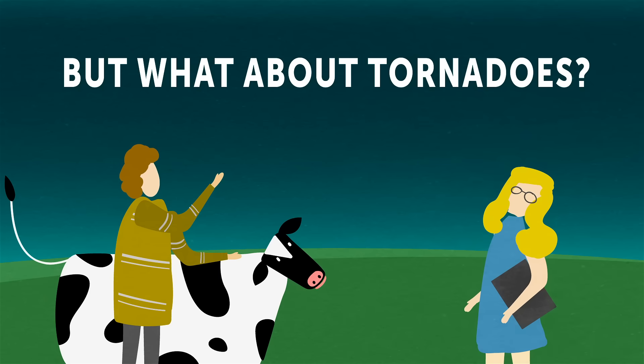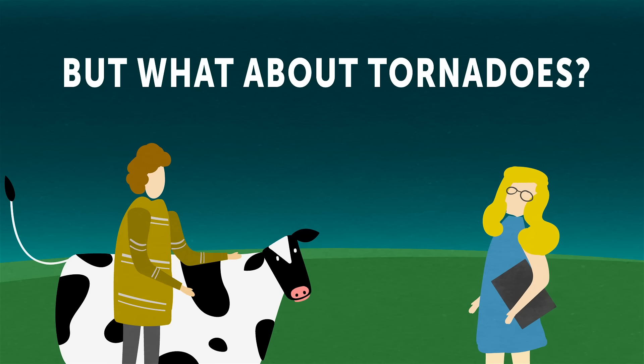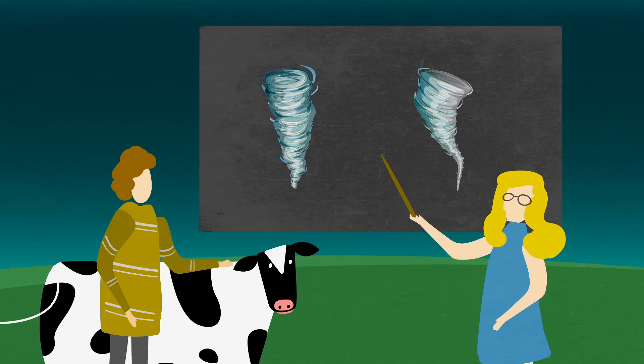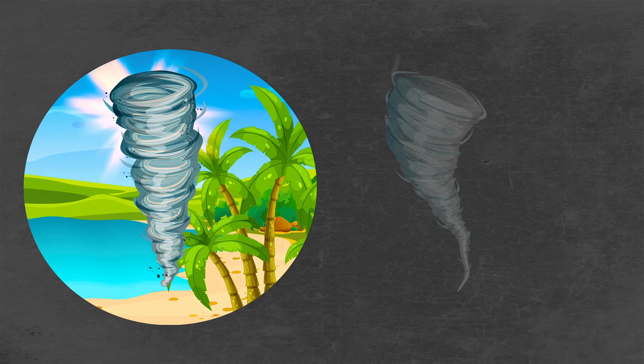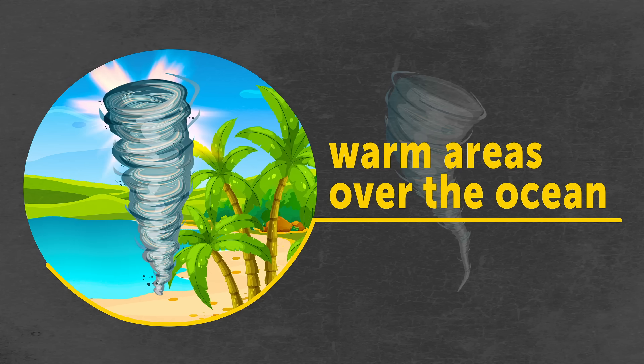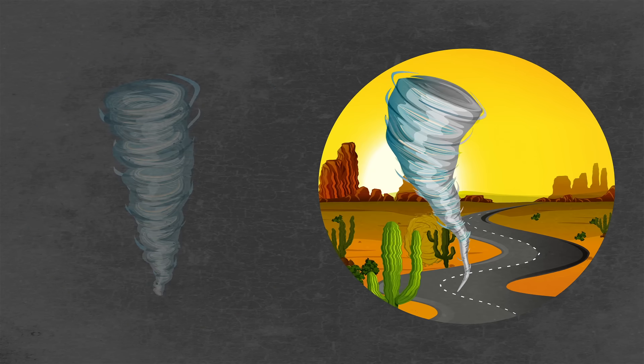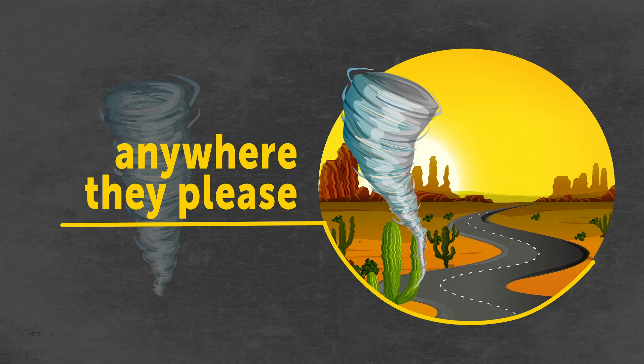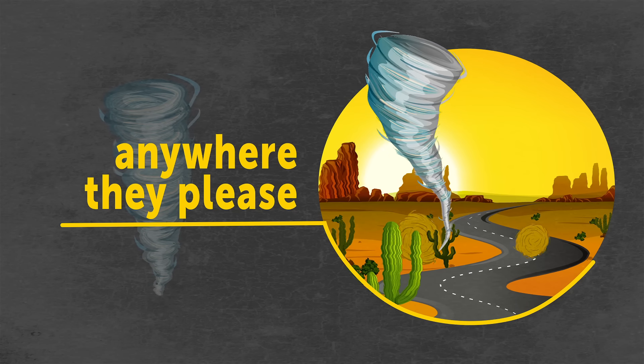But what about tornadoes? Are they the same as cyclones? No. In fact, these two can't be more different. First, tropical cyclones only form in warm areas over the ocean. They can never occur anywhere else. Tornadoes, on the contrary, can form almost anywhere they please, both over sea and over land. But there's much more to it than that.